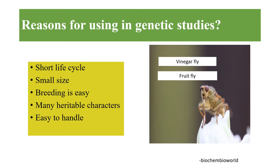The reasons for using it in genetic studies: first is short life cycle. The second is the size of the fly is small and hence it is easy to handle and it usually occupies less space in laboratories. Breeding is easy. The number of chromosomes is 2n equal to 8, and it has many heritable characters like eye color, eye shape, body color, wing size, wing shape, and hairs on body.